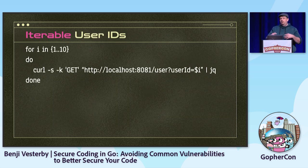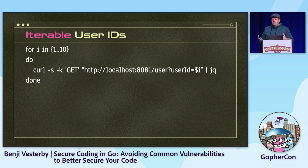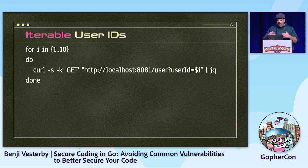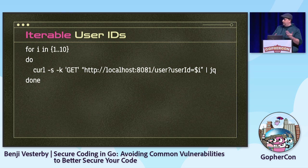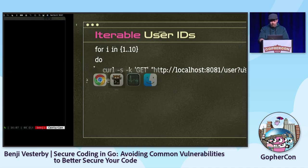The application right now has iterable user IDs. I did this on purpose because in and of itself it's not a vulnerability, but it can lead to an attacker being able to exploit an application. When an attacker approaches an application, they'll do a certain amount of evaluation to enumerate different types of data. In this example, the application has an integer ID and is enumerable.